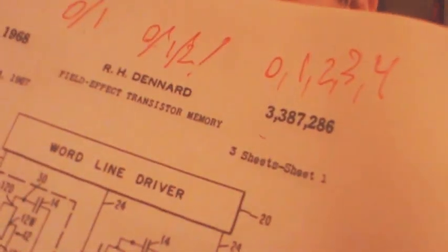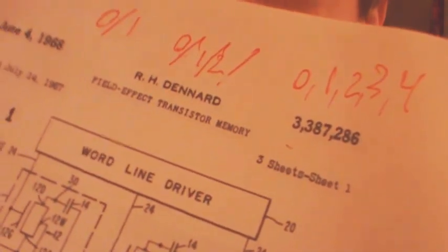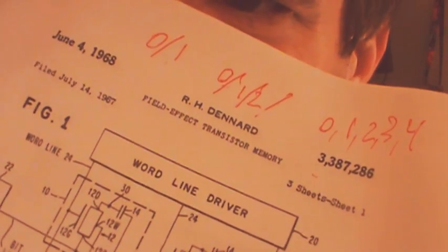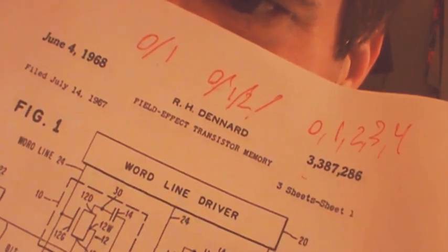Then I started learning more about electronics, started figuring stuff out, and today I read the patent number 3387286. That says Field Effect Transistor Memory, otherwise known as Random Access Memory.